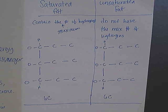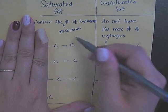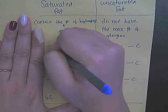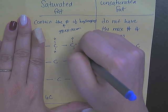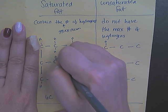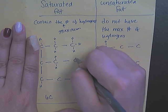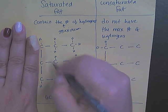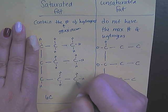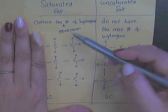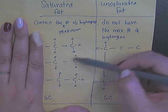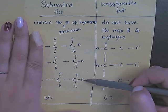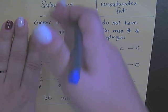A saturated fat would contain the maximum number of hydrogens. Focusing on this portion: this carbon has two bonds so it can bond with two more hydrogens; this one has one bond so it can bind with three hydrogens; and so on for the remaining carbons. Counting all the hydrogens, I get fifteen hydrogens — and that is my saturated fat.